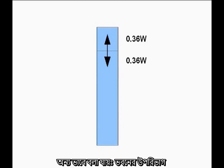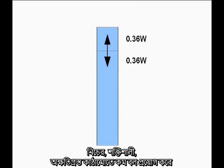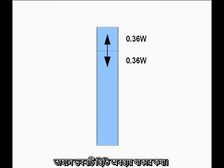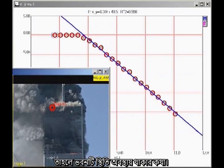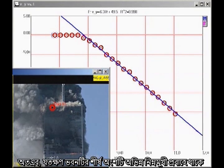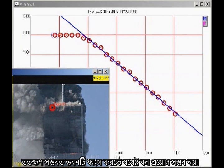In other words, the top section of the building is exerting less force on the lower, stronger, undamaged structure than it would if it were simply sitting motionless. Therefore, as long as the top section of the building is in uniform downward acceleration, it cannot possibly be providing sufficient force to destroy the building.